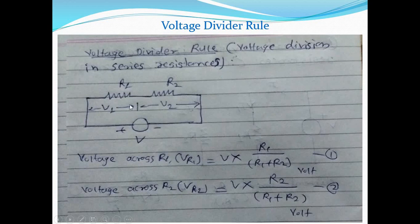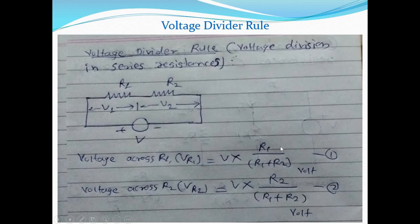The voltage divider rule is used to find out the voltage drop across any element. The voltage across R1, denoted VR1, is equal to total voltage V multiplied by R1, divided by the sum of resistances in which voltage gets divided, that is R1 plus R2.